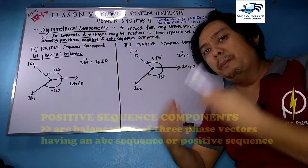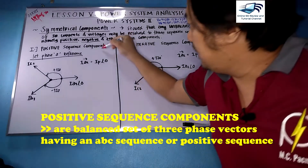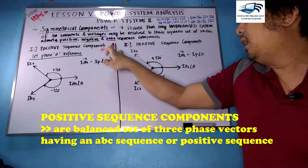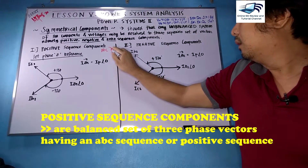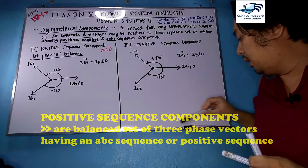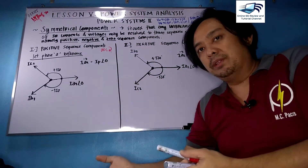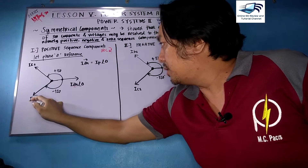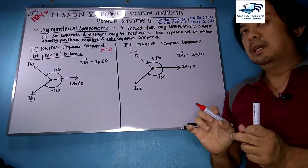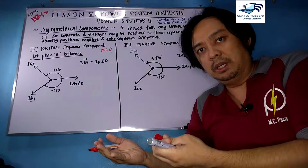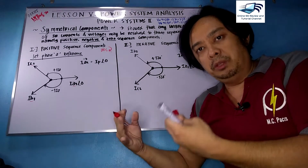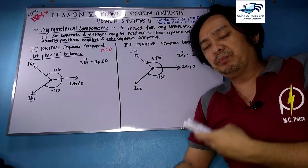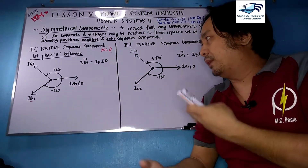Let us discuss the sequence components and their relationship to each other. A positive sequence component is a group of balanced set of vectors which uses the ABC clockwise relationship. As you can see, it uses the A, B, and C clockwise relationship. They are of the same magnitude, they are balanced, and they must be 120 degrees apart. We also use phase A as the reference.